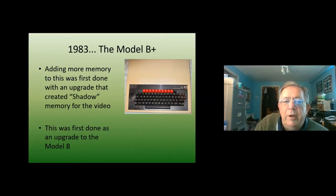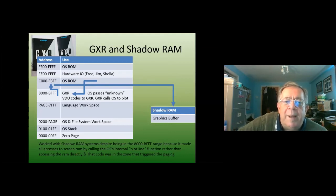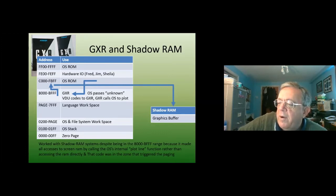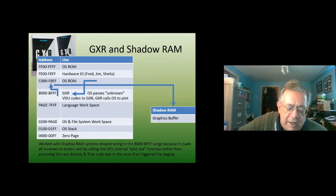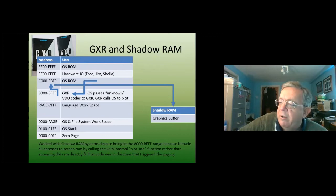We knew the B Plus was coming when we were working on the Graphics Extension ROM. We had to make sure the GXR didn't access video RAM directly — it always had to call back into the operating system and use the OS plot routine to write to the graphics buffer. If it hadn't done that, it wouldn't have worked with the shadow RAM or the ARIES B20 board, but we knew it was all happening so we made sure it did.